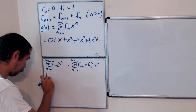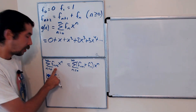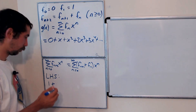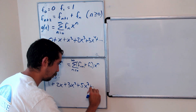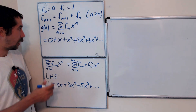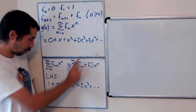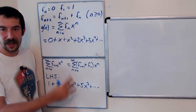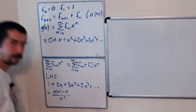Let's start with the left-hand side. Write out a few of the terms and compare to g of x. The second Fibonacci number is 1, the third Fibonacci number is 2, and so forth. This is very similar to g of x over x squared — if you divide all terms by x squared, they shift down. But the x term causes a problem, so we subtract off the x and then divide by x squared. So the left-hand side is equal to g of x minus x, over x squared.